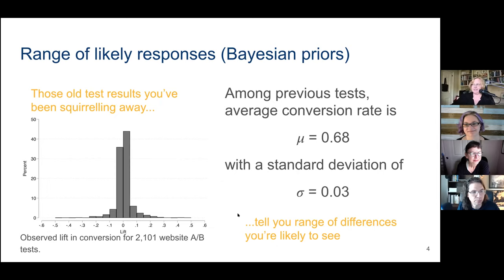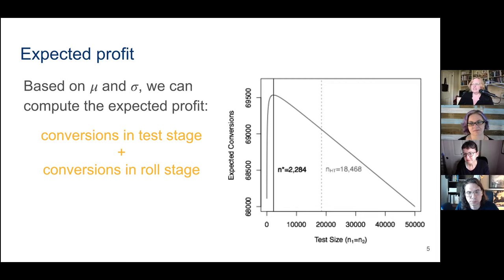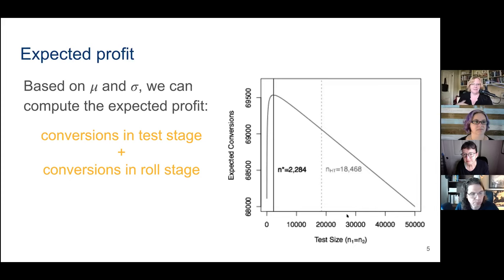Once I have that information from old tests, I can compute my expected profit from the test and roll — all the conversions I get in the test stage plus all the conversions I get in the roll stage. I can compute that expected profit as a function of my test size. Here's a graph of that — I won't show you the equation; it's in the paper with lots of Greek letters.